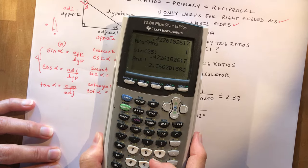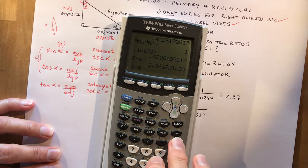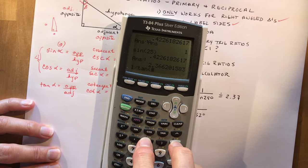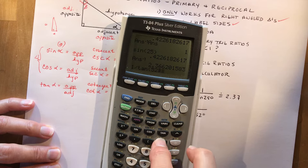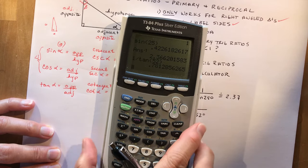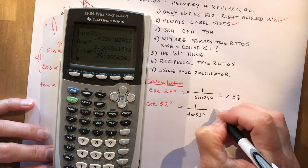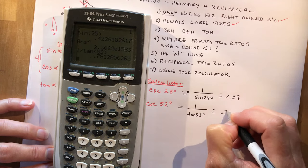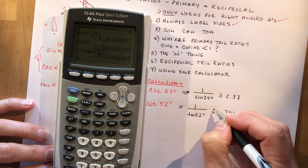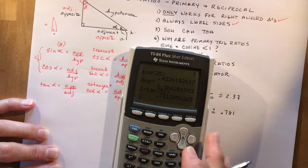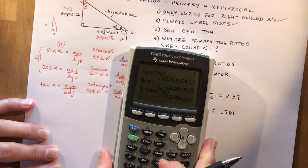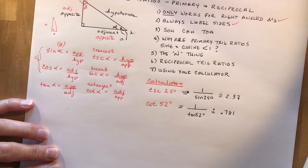So back on your calculator, 1 divided by the tangent of 52 degrees equals 0.781, approximately equal to 0.781. Approximately equal to, reason for that because you have all these decimals and you're rounding somewhere along the way. Okay.